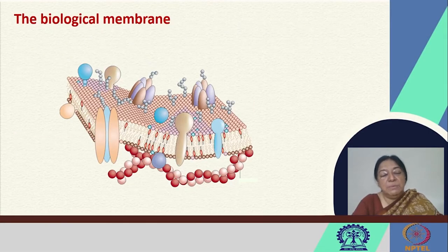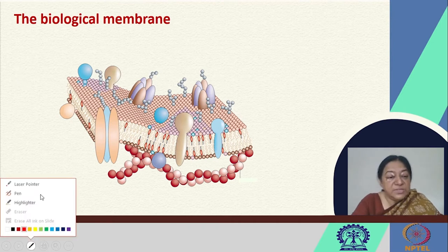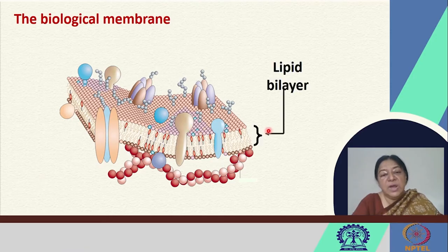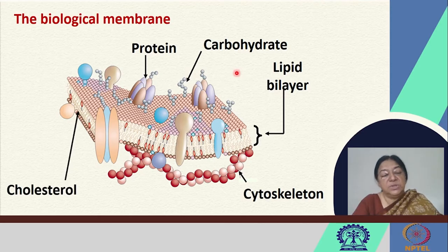When we look at the biological membrane, as we saw in previous lectures, we have the specific lipid bilayer and the combination of the lipid bilayer with different types of proteins. When looking at integral membrane proteins, the lipid bilayer, the cytoskeleton, the protein, and the carbohydrates are linked to the protein by several amino acid residues.